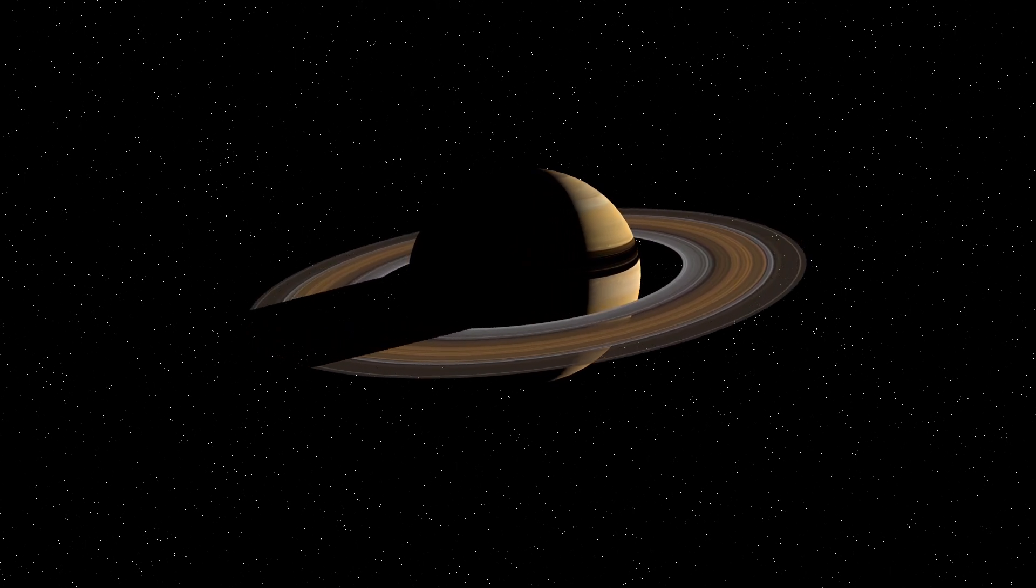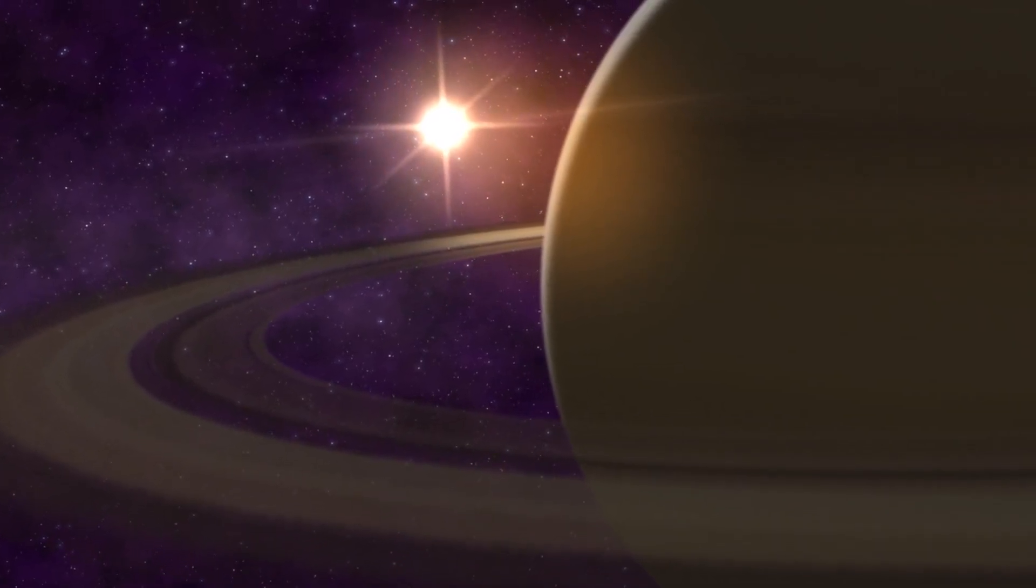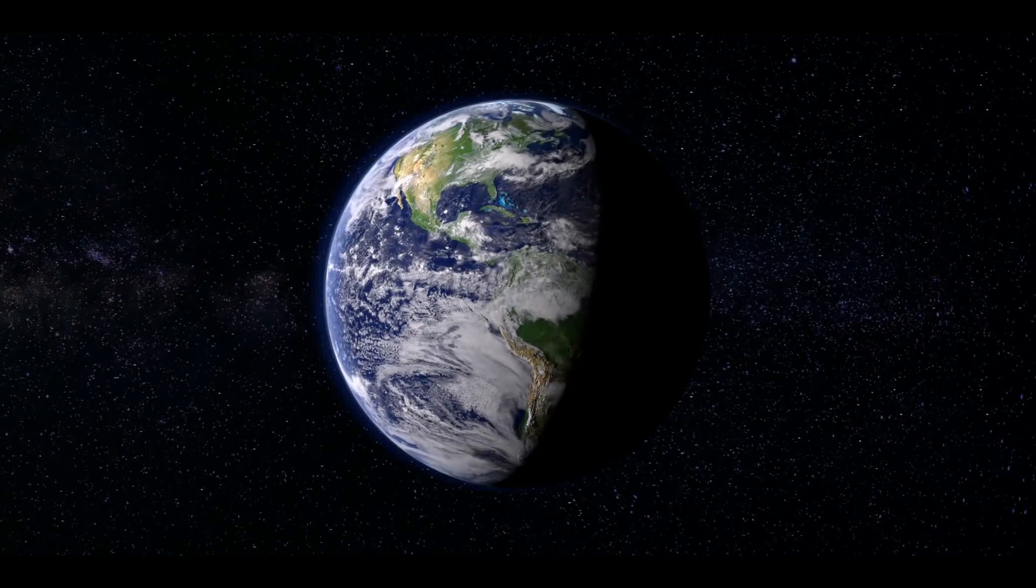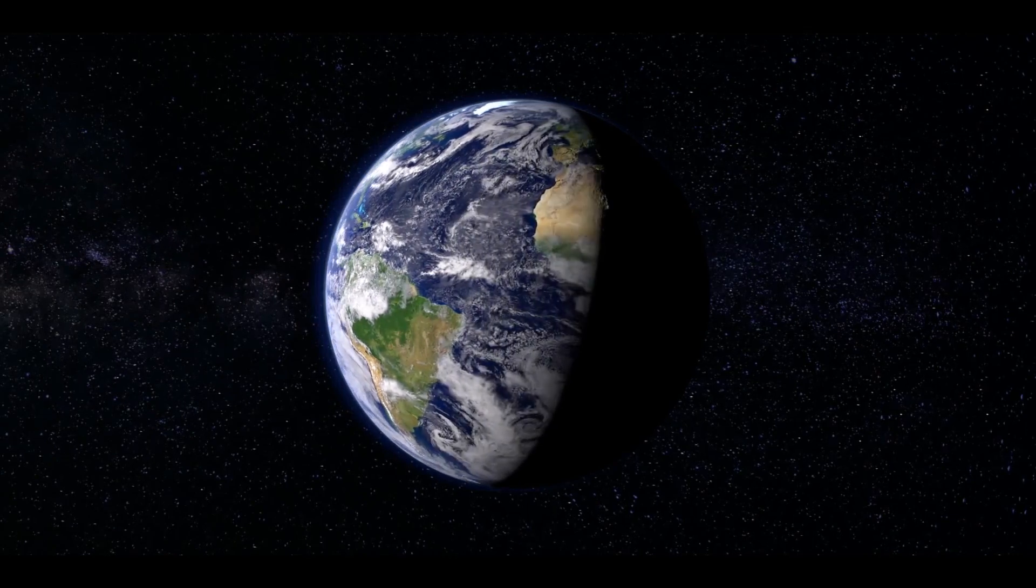Saturn's moon Enceladus has a subsurface ocean and geysers of water vapor shooting into space. It's one of the most probable places to have life beyond Earth in our solar system.